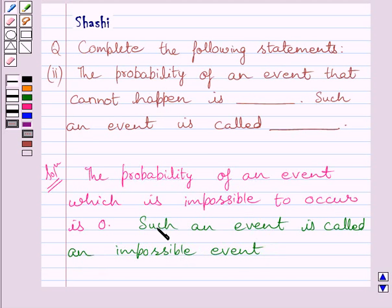Now from this discussion, we get probability of an event that cannot happen is zero, and such an event is called impossible event.